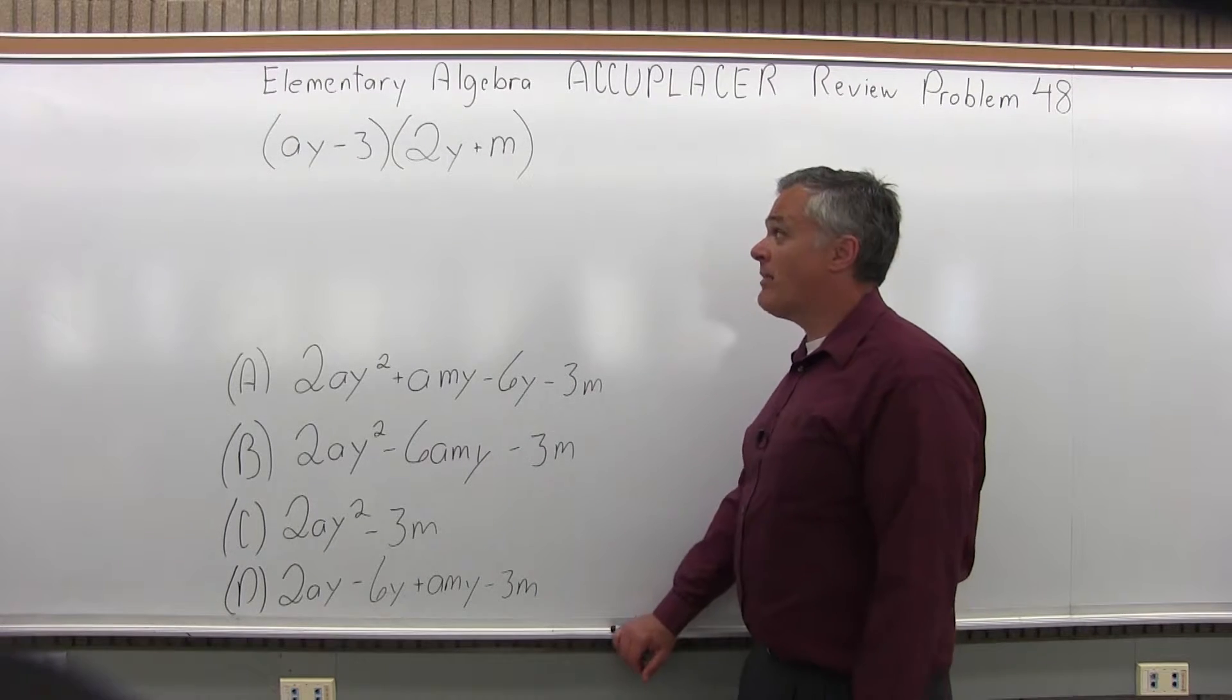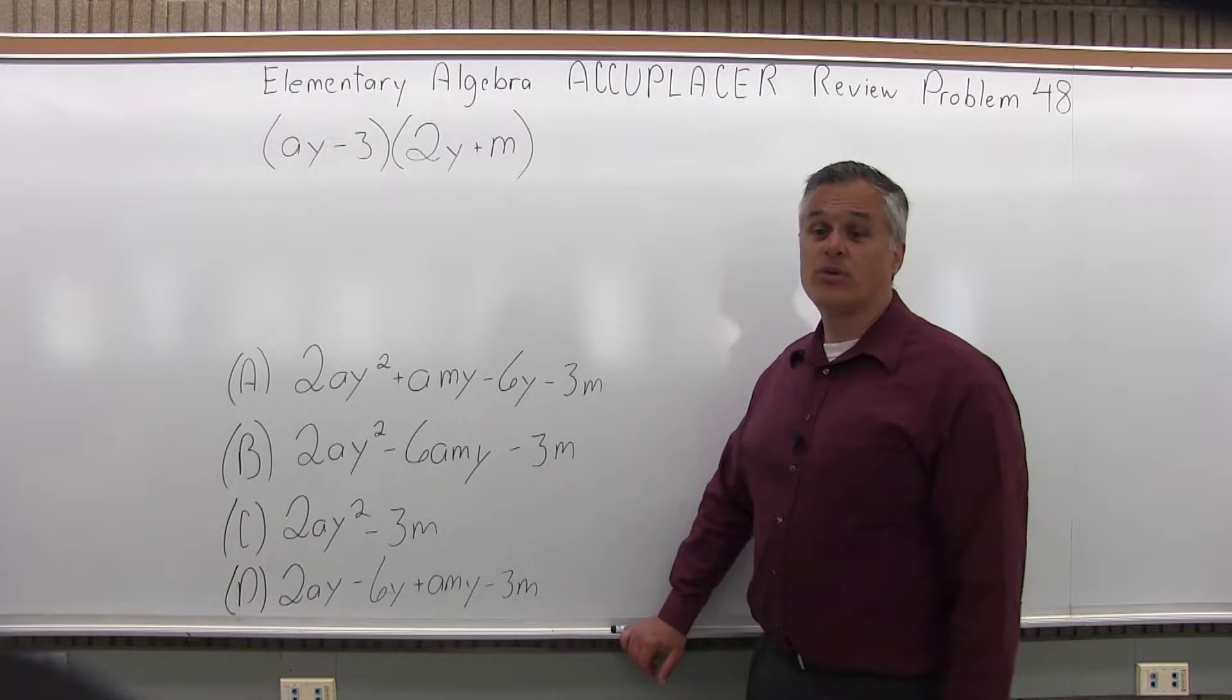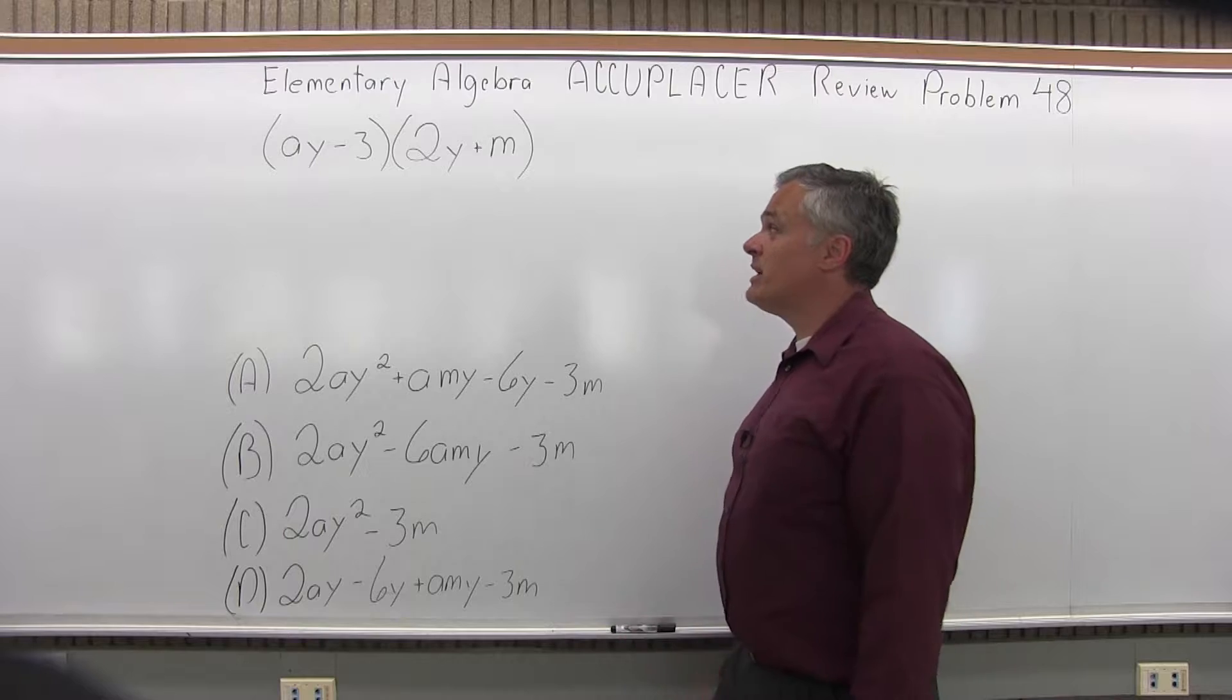We have (AY - 3) times (2Y + M). So if we multiply this out...